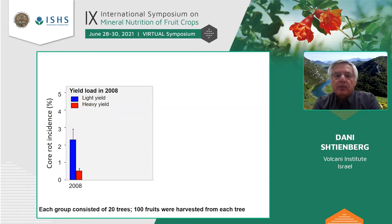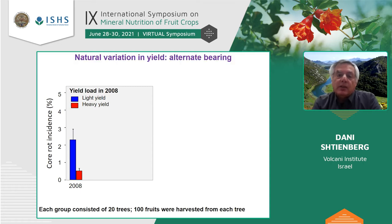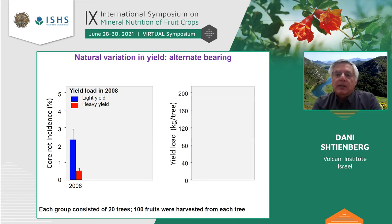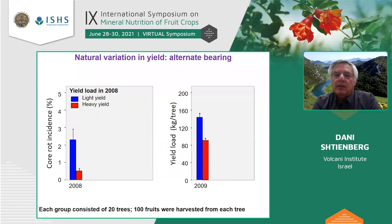These trees were in the same orchard, and the reason for the difference in their yield was alternate yielding, which is quite normal and causes natural variation in yield. Because of alternate bearing, in the following year we followed the same trees and estimated the yield. Indeed, the trees that in 2008 had light yield, in the following year had higher yield than the other trees.